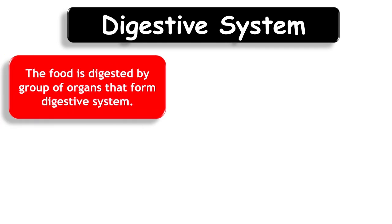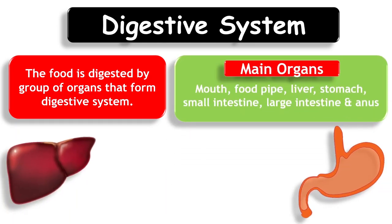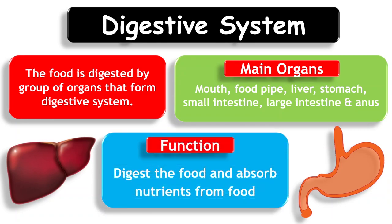Digestive System. The food is digested by a group of organs that form the digestive system. Main organs: mouth, food pipe, liver, stomach, small intestine, large intestine, and anus. Function: It digests the food and absorbs nutrients from food.